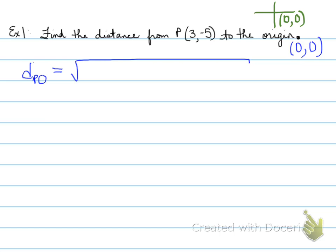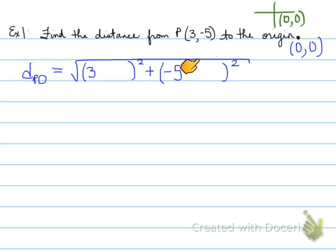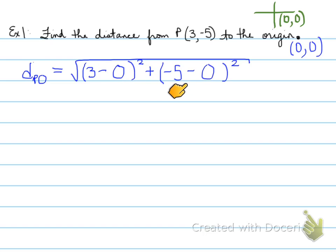Remember the formula — two sets of brackets, each squared, added together under a square root. We go from P to O, so P's coordinates (3, -5) go in as X1 and Y1, and O's coordinates (0, 0) go in as X2 and Y2. You're always subtracting the values in each bracket.